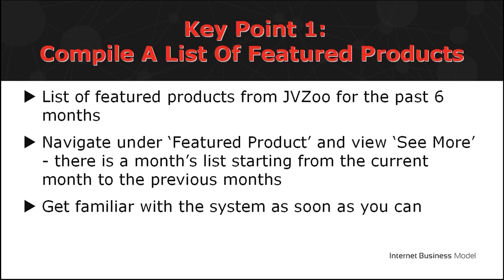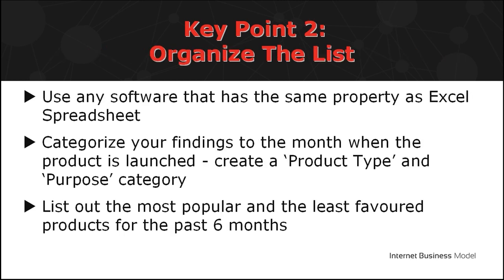Organize the list using an Excel spreadsheet. Categorize your findings to the respective month the products were launched. Then create another category and column to classify products as Software Program, web-based app, graphics, or a hybrid product. A hybrid product is a combination of two different product types — for example, a web-based software that generates graphics and logos. The last category is Purpose — for example, is the product created for traffic or list building, email marketing, SEO, or logo and graphics creation?